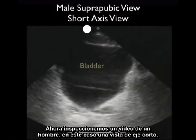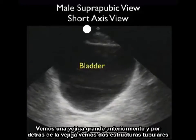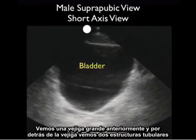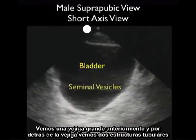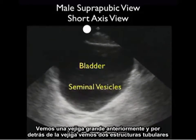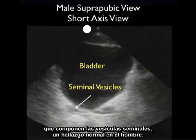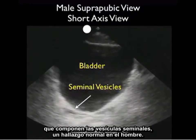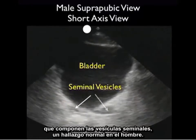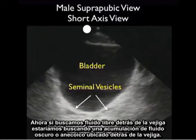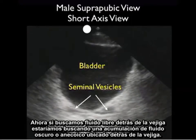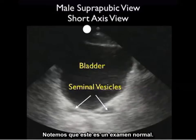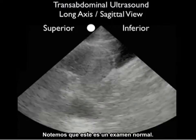Now let's inspect a video clip from a male — in this case a short axis view. We see a large bladder anteriorly, and behind the bladder we see two tubular structures making up the seminal vesicles, a normal finding in a male. Now if we were looking for free fluid behind the bladder, we'd be looking for a dark or anechoic fluid collection layering out behind the bladder. Notice this is a normal examination.